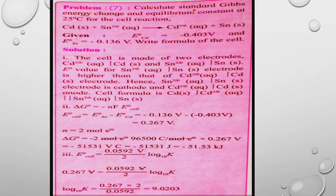The cell is written as: Cd | Cd²⁺(aq) || Sn²⁺(aq) | Sn. Since tin has a higher (less negative) electrode potential than cadmium, tin is the cathode and cadmium is the anode. Two electrons are transferred in this cell reaction.